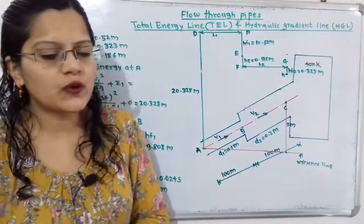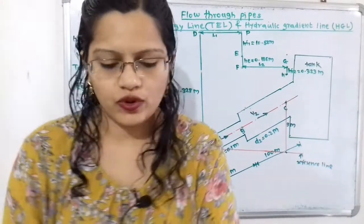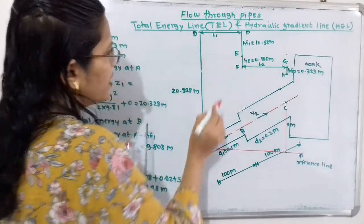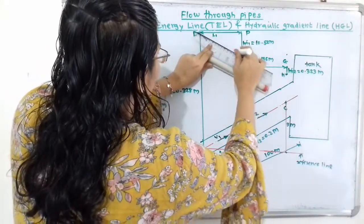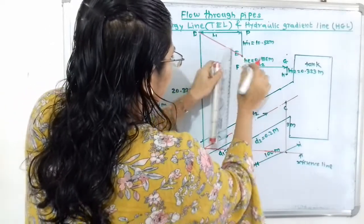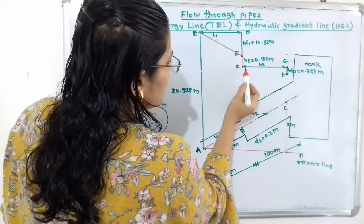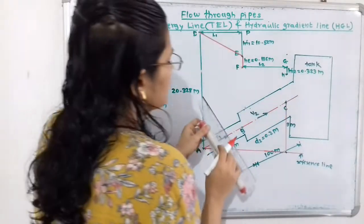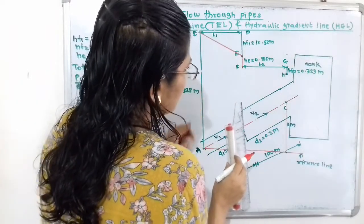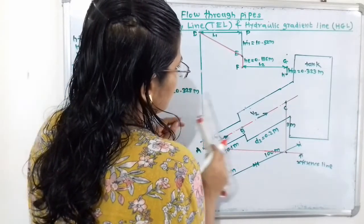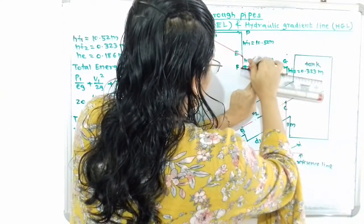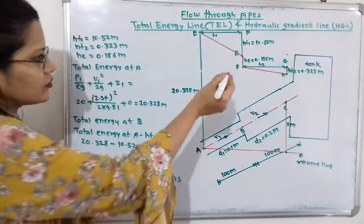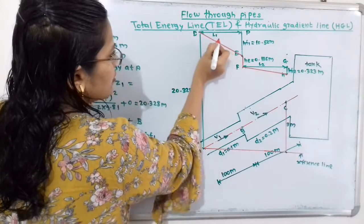Now we draw the total energy line. Using a red marker, we draw the line from D to E, then E to F, and then from F to H. The line D-E-F-H is the total energy line.